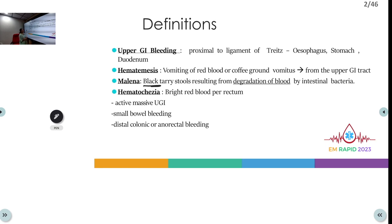Hematochezia is bright red color blood from the rectum. It can occur because of a massive upper GI bleed — when the volume is so large that blood doesn't get enough time to degrade in the stomach, so it remains red when it reaches the lower GI tract. Or it can be due to a lower GI bleed, including small bowel bleeding, distal colonic bleeding, or anorectal bleeding.